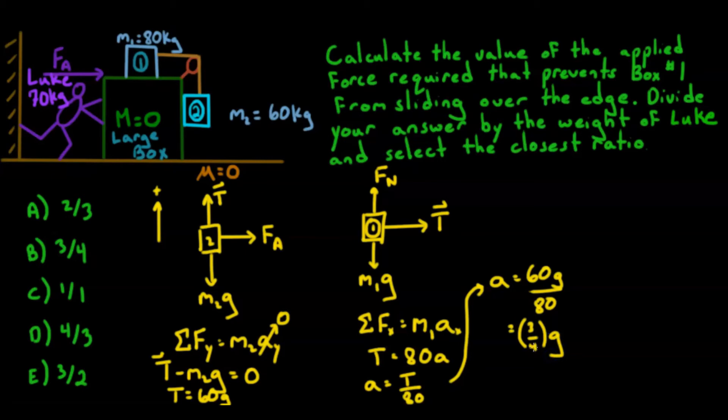So now, what we want is we want Luke to be able to push this entire system to give it the exact same acceleration. So if we're going to look at Luke, then the sum of all forces in x is going to equal that total mass of the whole system times by that necessary acceleration. So the only force here is this applied force by Luke, because again, there's no friction.